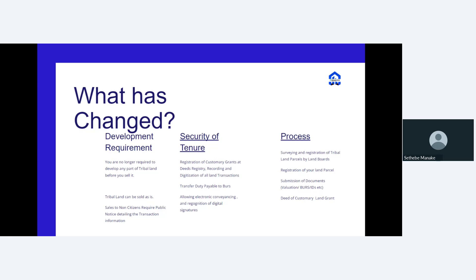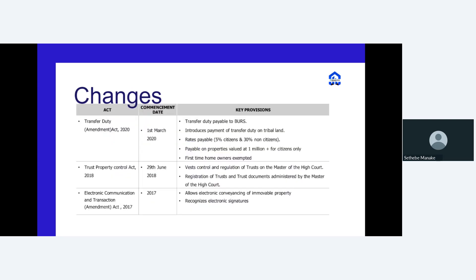After the land boards have registered all these parcels and received their own title deeds, they would then be able to register your individual land parcel and give you your title deed. There is a change in the submission of documents required for transfer of tribal land, and there is the introduction of the deed of customary land grant — which is in some way equivalent to a title deed going forward. This is now a registrable land title for tribal land across the country.